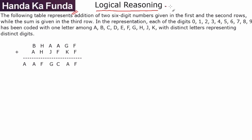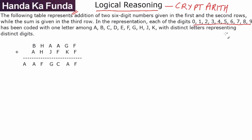This one deals with the branch of logical reasoning known as cryptarithmetic. In cryptarithmetic, you are given a set of letters — A, B, C, D, E, F, G, H, J, K — and a set of numbers from 0 to 9, and you need to figure out which letter represents which number.